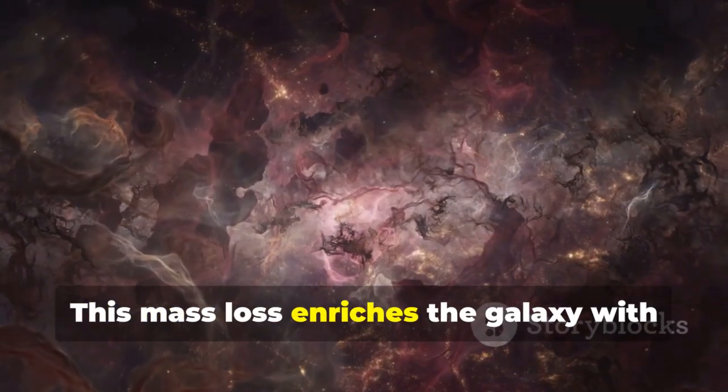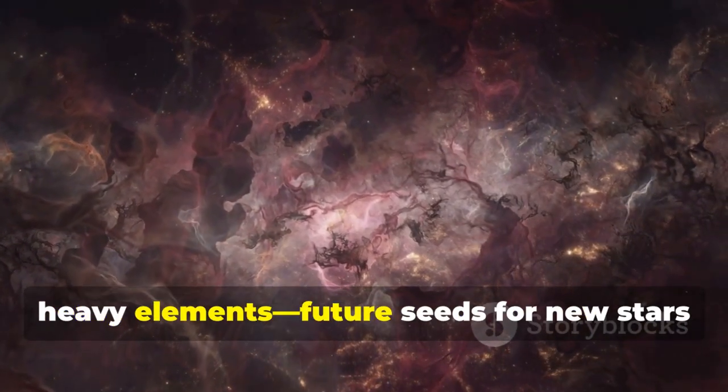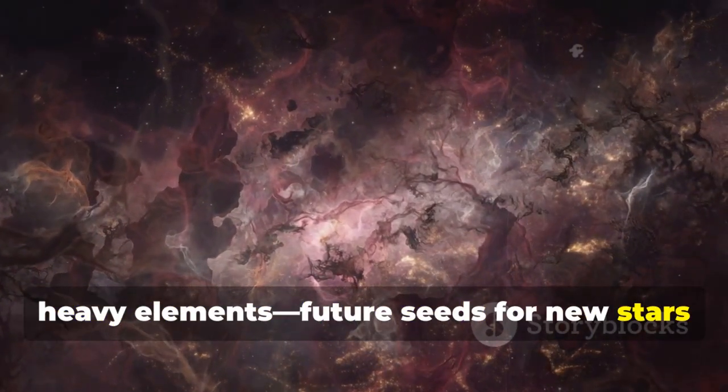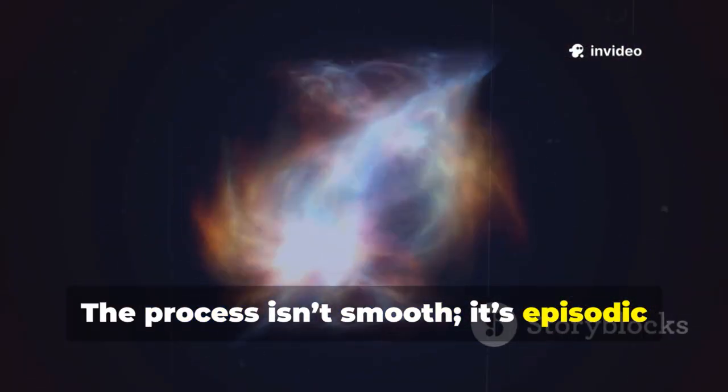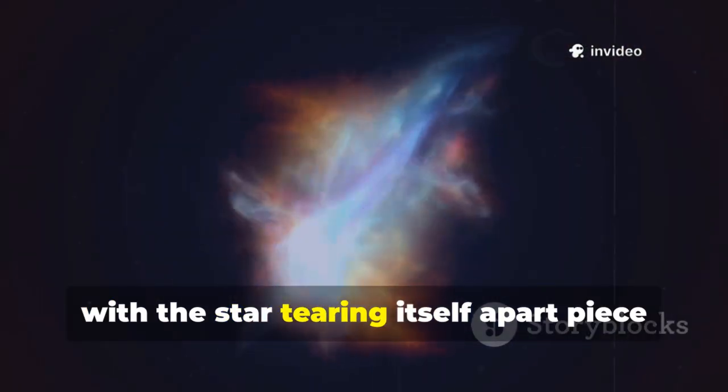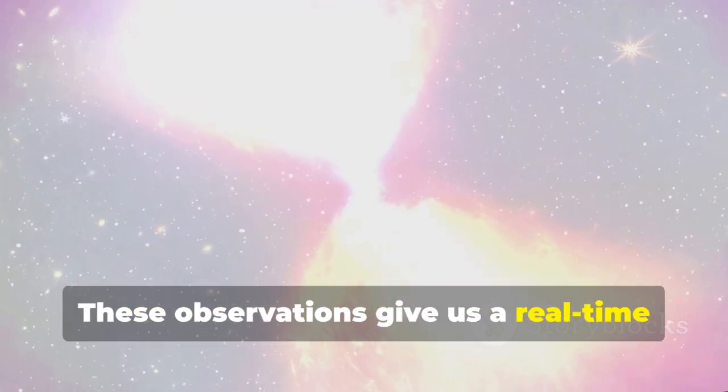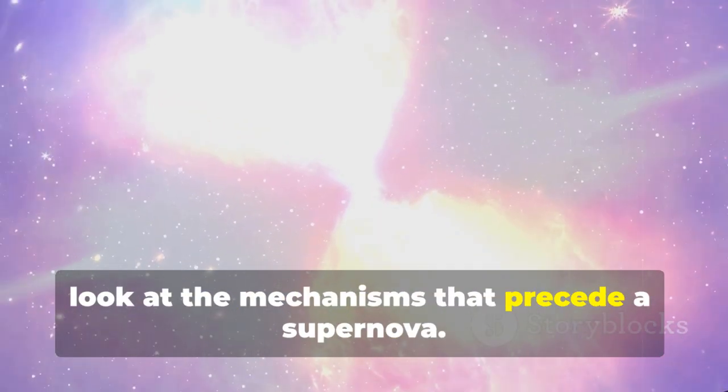This mass loss enriches the galaxy with heavy elements, future seeds for new stars and planets. The process isn't smooth, it's episodic and violent, with the star tearing itself apart piece by piece. These observations give us a real-time look at the mechanisms that precede a supernova.